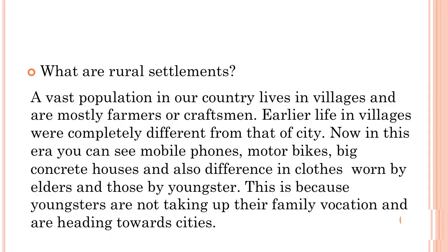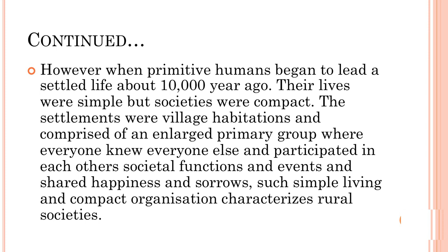Now we will discuss the next section of this lesson — rural settlement. A vast population in our country lives in villages and are mostly farmers or craftsmen. Earlier, life in villages was completely different from that of a city. Now you can see mobile phones, motorbikes and big concrete houses, and differences in clothes between elders and younger people, because youngsters are heading towards cities. When primitive humans began to lead a settled life about 10,000 years ago, their lives were simple but societies were compact, comprising an enlarged primary group where everyone knew everyone else and participated in each other's social functions and events.